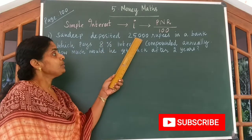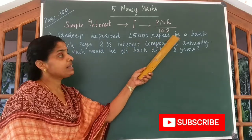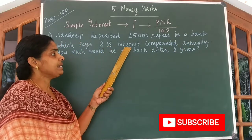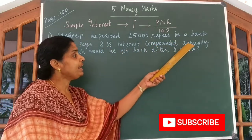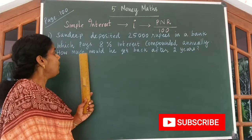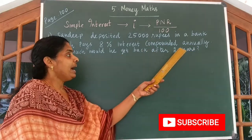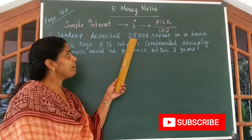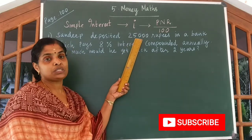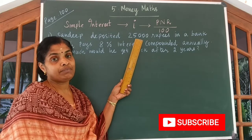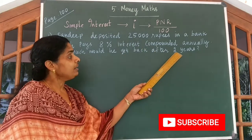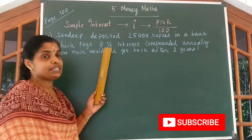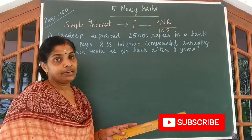Sandeep deposited ₹25,000 in a bank which pays 8% interest compounded annually. How much would he get back after 2 years? Here, the amount deposited ₹25,000 is the principal value P, 2 years is the number of years, and 8% is the rate.